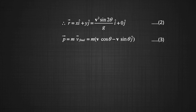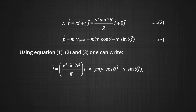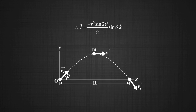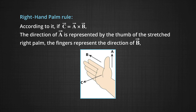Taking the cross product of the position vector and the linear momentum, we get L vector equal to (v² sin 2theta / g) i-cap cross m times (v cos theta i-cap minus v sin theta j-cap). After doing the cross product we get L vector equals minus v³ sin 2theta sin theta upon g into k-cap. The direction of the angular momentum is observed to be in the vertically downward direction. By representing the vectors in i-j-k form the direction can be obtained mathematically, but we can also use the right-hand palm rule to determine the direction of angular momentum.